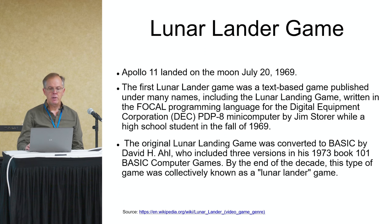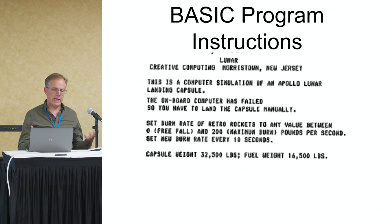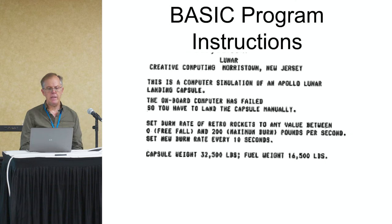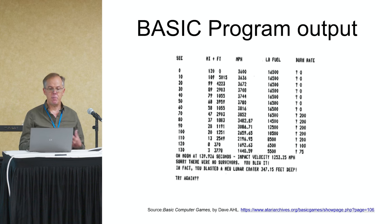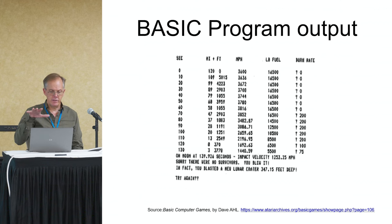The Lunar Lander game looked like this: you had instructions and were trying to land — the computer has failed, so you're doing it manually. All you can do is adjust the amount of thrust. It's a text-based output that gives you at zero seconds your speed and height, and asks: how much burn rate of fuel do you want to use as you try to slow down the vehicle and land on the moon?